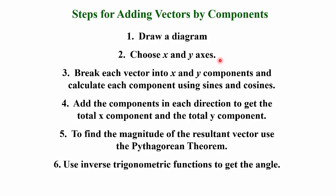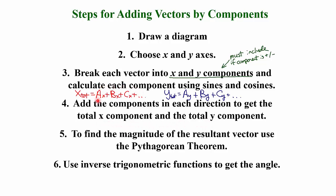A previous video went through calculating X and Y components of vectors using sines and cosines. If those components are negative — if the X component points to the left or the Y component points down — you need to include that negative sign for the later steps. You then add the components in each direction to get the total X component and the total Y component. Add all your X components together, including negative signs, to get the X component of the resultant vector, then add all Y components to get the Y component of the resultant vector.